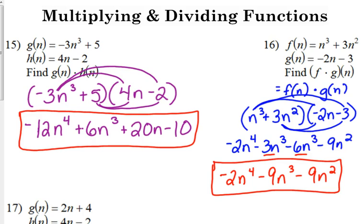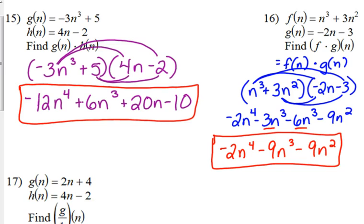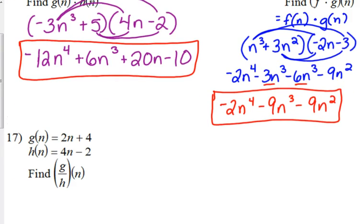You could pull out a GCF, but it's not really the point of this, so they won't be in factored form. But technically you could, and actually we're going to have to in number 17.